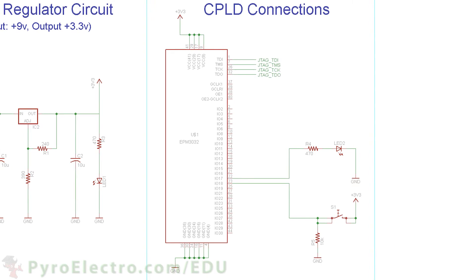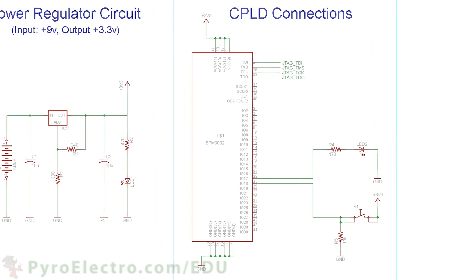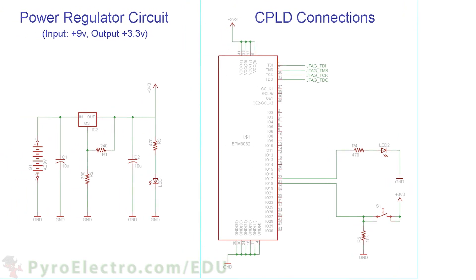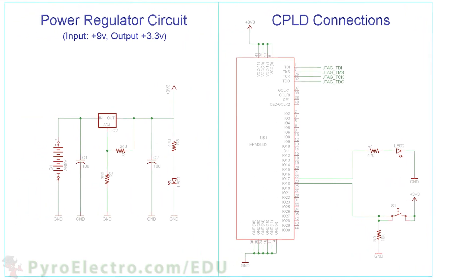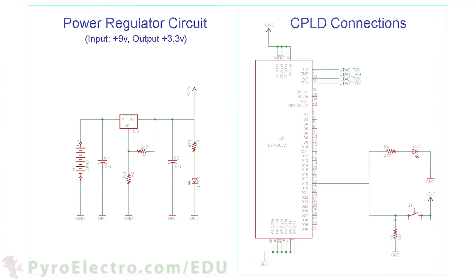So when we load in the code from the Lesson 3 project, pin 23 is a logic 0 initially, so the LED connected to pin 22 should also see a logic 0 and it will be off. But when the button is pressed, 3.3 volts will be present at pin 23, so pin 22 should change to a logic 1 and output 3.3 volts to the LED, turning it on.